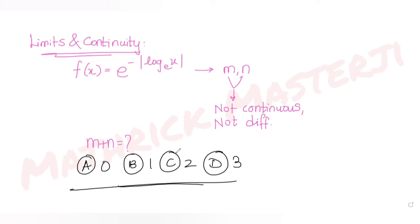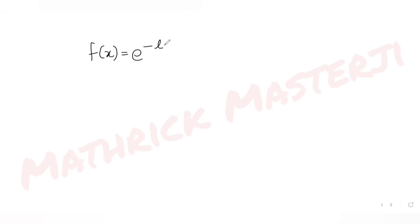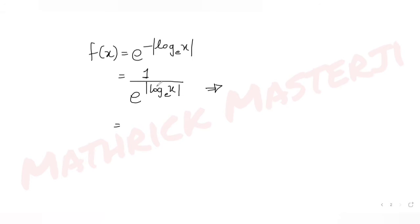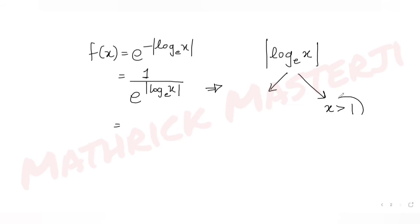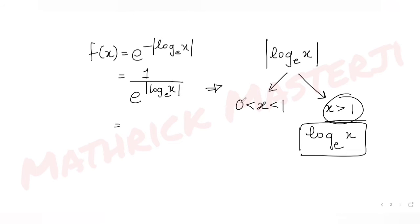f(x) is e raised to negative mod of log x to the base e. I can write this as 1 over e raised to mod of log x to the base e. Now analyzing the sign of the natural log inside the modulus: log of 1 to any base is always 0. So for any value of x greater than 1, the logarithm is positive, giving us log x to the base e. For x between 0 and 1, the logarithm is negative.